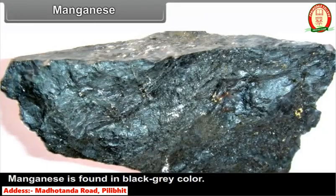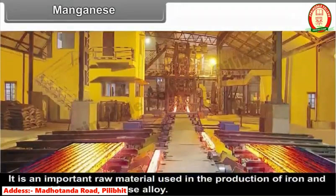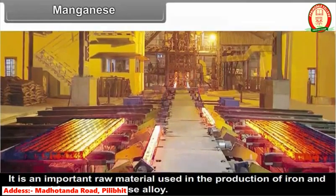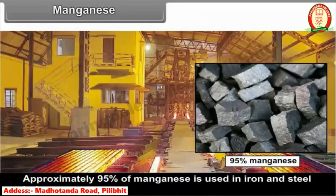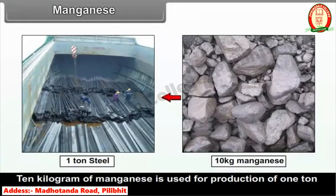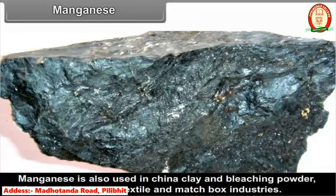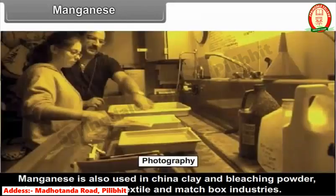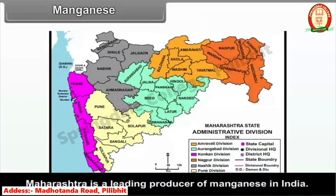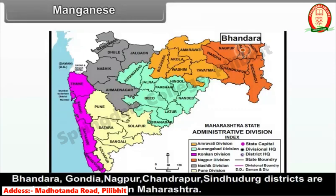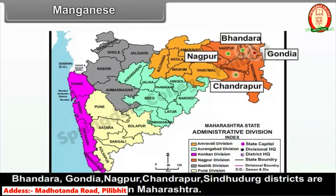Manganese is found in black-grey color and is an important raw material used in the production of iron and steel and ferro-manganese alloy. Approximately 95% of manganese is used in the iron and steel industry, and 10 kg of manganese is used for the production of 1 ton of steel. Manganese is also used in china clay and bleaching powder, photography, cotton textile, and matchbox industries. Maharashtra is a leading producer of manganese in India. Bhandara, Gondiya, Nagpur, Chandrapur, and Sindhudurg districts produce manganese.